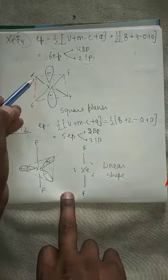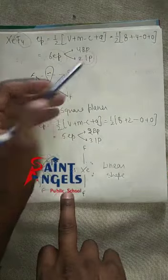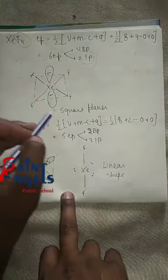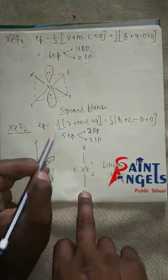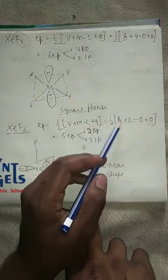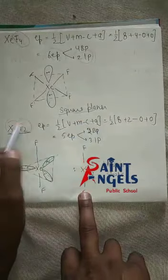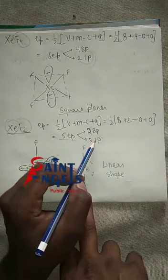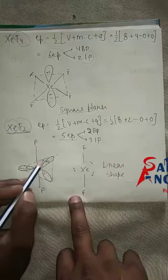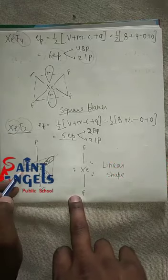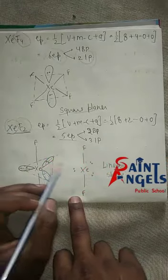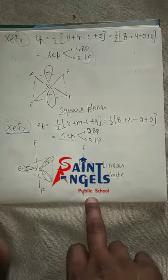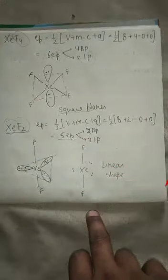For XeF4, the geometry is octahedral because there are 6 electron pairs. Since there are 2 lone pairs, the shape is square planar. For XeF2, we calculate electron pairs: half of (8 + 2) = 5 electron pairs. Out of 5 electron pairs, 2 are bond pairs and 3 are lone pairs. The parent geometry is trigonal bipyramidal, and with the lone pairs in equatorial positions, XeF2 has a linear shape.